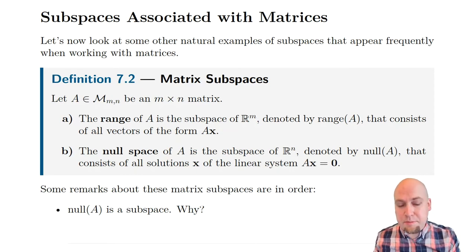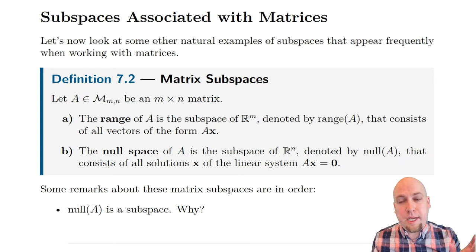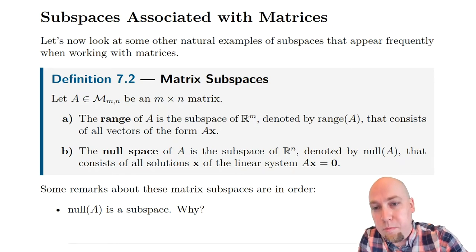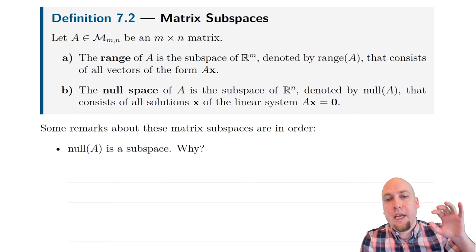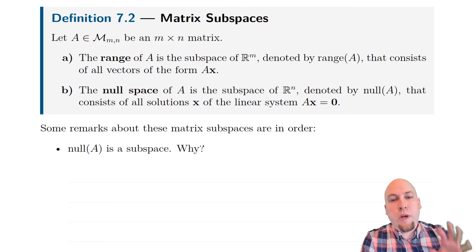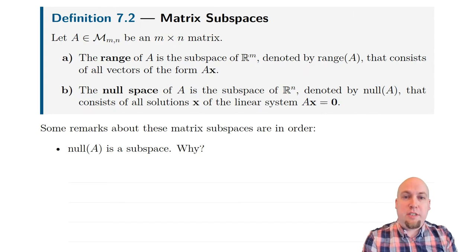These subspaces come from looking at matrices. What are these two new subspaces? They're called the range and null space of a matrix.